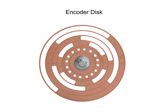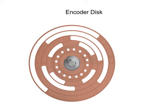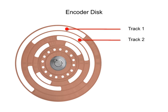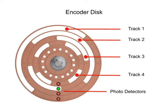The encoder disk consists of a series of opaque and transparent tracks mounted to a rotating shaft. The tracks of the disk are arranged concentrically around the center of the shaft. Photo detectors assigned to each track designate the resolution of the encoder. The higher the number of concentric tracks, the higher the accuracy.